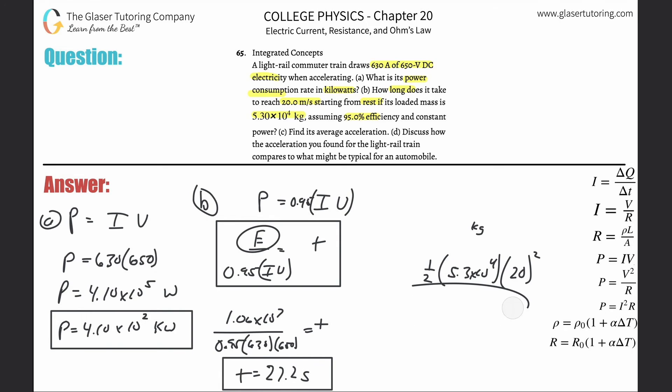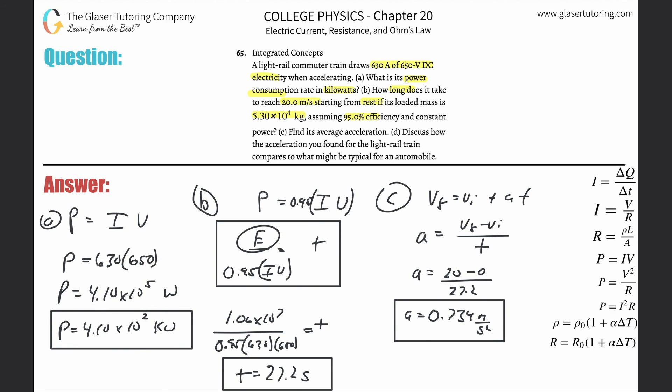All right, there's a letter c. Let us see, find this average acceleration. Let's just do this in terms of kinematics: final velocity equals the initial velocity plus the acceleration times time. The acceleration is going to be equal to the final minus the initial, all divided by then the time. This is 20 minus 0 all over 27.2, so the acceleration is going to be 0.734 meters per second squared. That's the average acceleration.